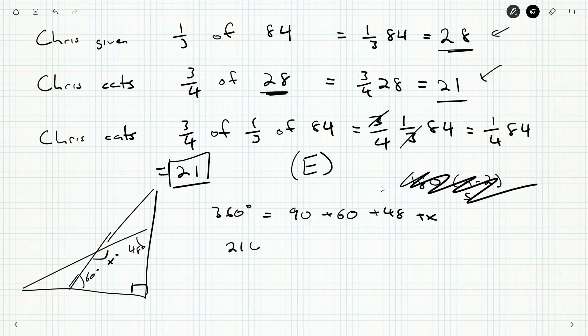knock off the 90, get 210. It's going to be 48 plus x. 210 minus 40 is 170, minus another 8 is 162.